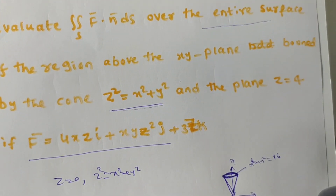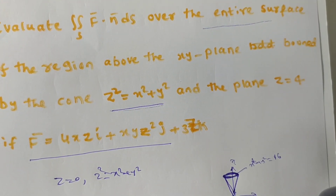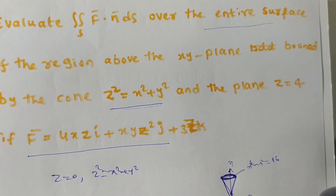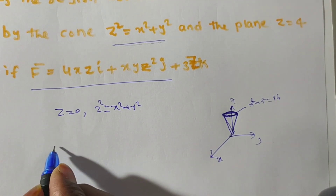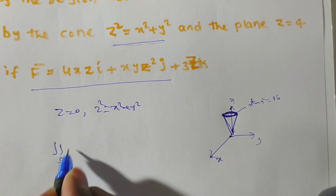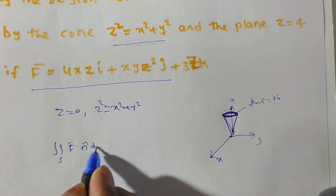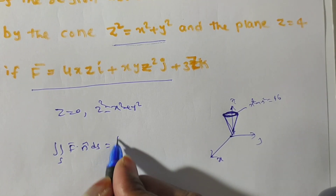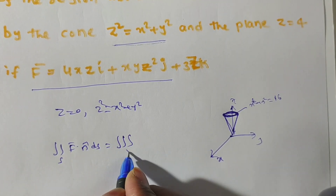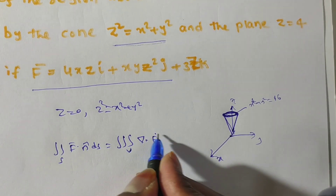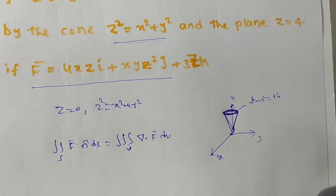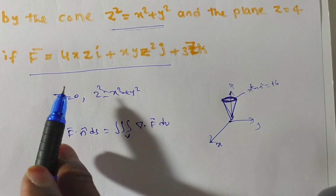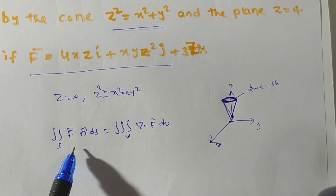Whenever S is a closed surface, we can apply the Gauss Divergence Theorem. By the Gauss Divergence Theorem, the formula is: double integral over S of F·n̂ dS equals triple integral over V of div F dV, or equivalently ∇·F dV. It is enough to evaluate the right-hand side.